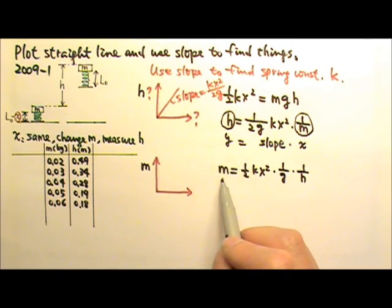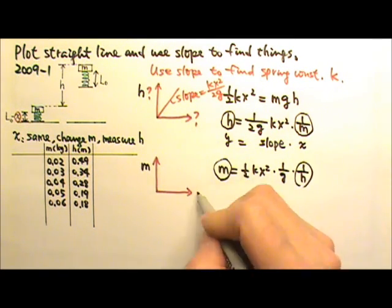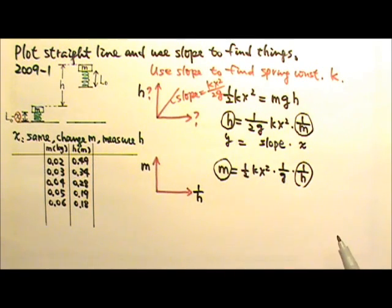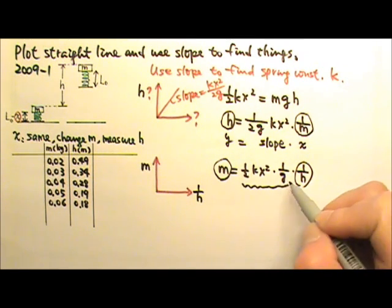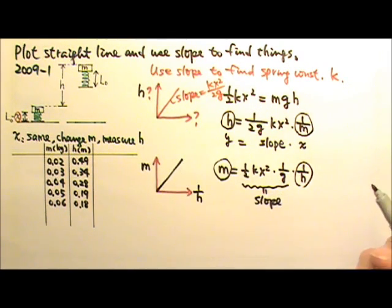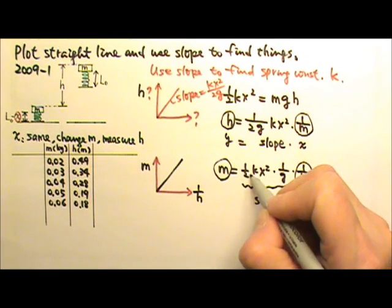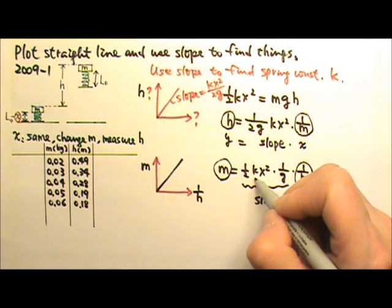That means if my vertical axis is the mass, then I should have 1 over h for my horizontal axis. In that case, this would equal to the slope. So if we can find the slope of the graph, then we just set the slope equal to this, and we'll be able to solve for the spring constant.